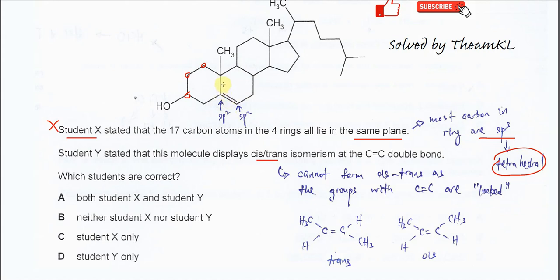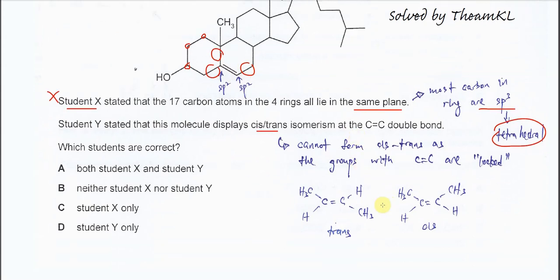So this C=C double bond, the groups that are bonded to the C=C double bond, actually they are fixed. It cannot really change. So I'll give you one example of how to form cis-trans.